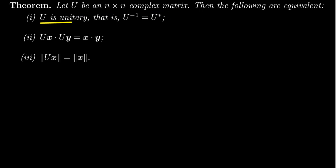So first, that U is a unitary matrix. That means that the inverse of U is equal to U star. Condition two, that for any vector, any vector x and y, Ux dot Uy is equal to x dot y.